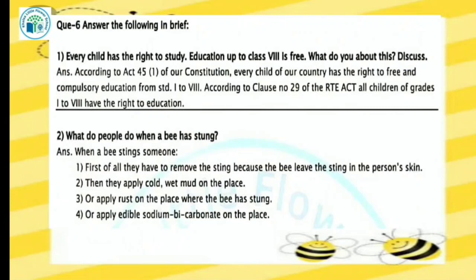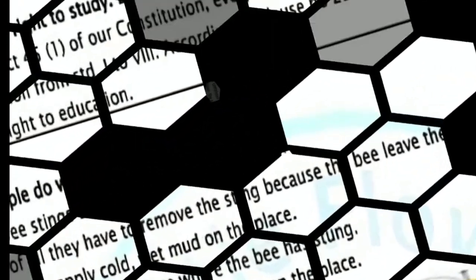Our next question is: what do people do when a bee has stung? When a bee stings someone, first of all they have to remove the sting, because the bee leaves the sting in the person's skin. Then apply cold wet mud on the place. Apply rust on the place where the bee has stung. You can also apply edible sodium bicarbonate on the place.